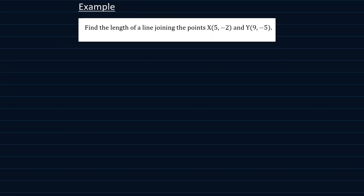Let us look at this example. Find the length of a line joining the points X with coordinates 5 and minus 2, and Y with coordinates 9 and negative 5.